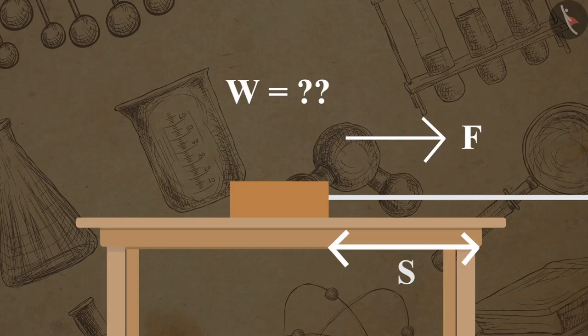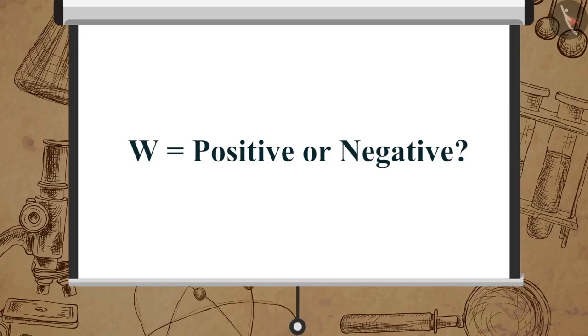What do you think would be the total amount of work done when force applied is zero or when the displacement of the object is zero? Do you think work done is always positive or is there something like negative work?